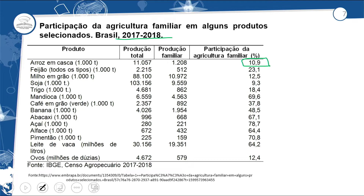Vamos verificar culturas que destacam a agricultura familiar. Feijão: produção total de 2.215 — a participação da agricultura familiar já aumentou para 23,1% em todos os tipos de feijão. Soja: a gente sabe que é produto do agronegócio. Produção total de 103, produção familiar de 9.559, mas a participação da agricultura familiar é só de 9,3% — a maior parte da produção da soja é no modelo mecanizado, do agronegócio agroexportador.